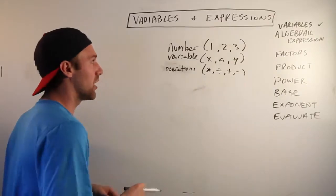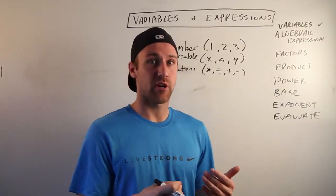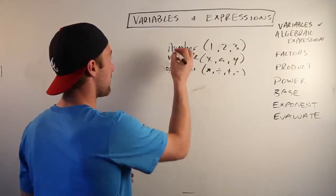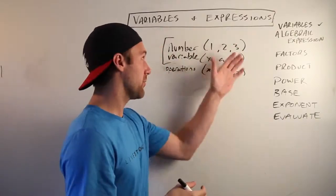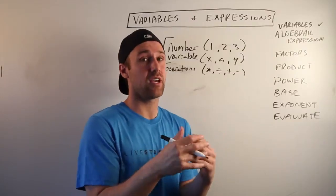Whenever you have an algebraic expression, you have to have two things. You have to have one or more numbers and variables - it can be numbers, it could be variables, it could be both, it could be whatever.